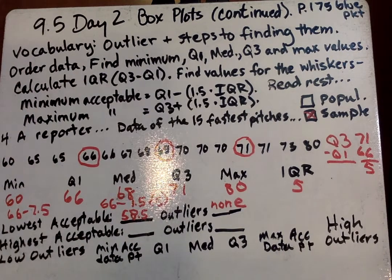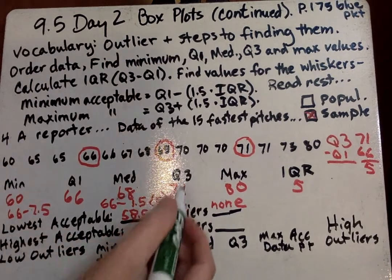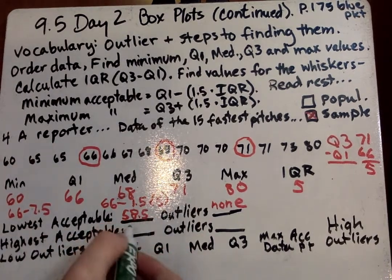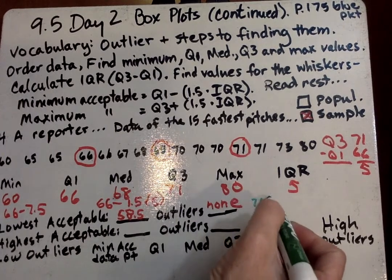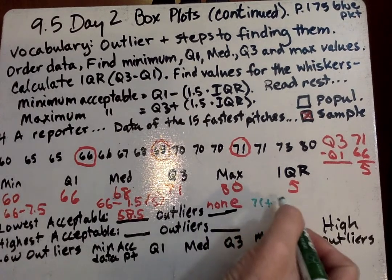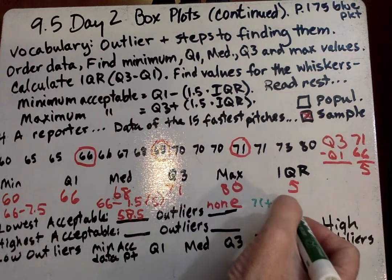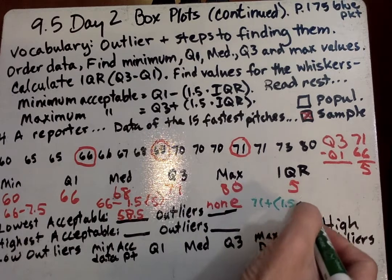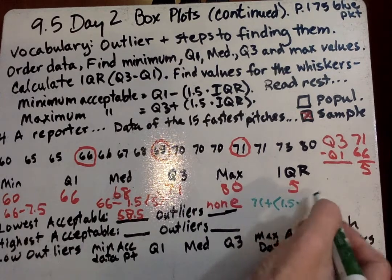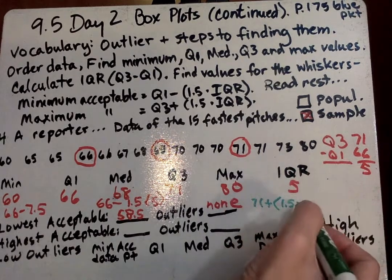Now, for our highest acceptable, we're going to take our quartile 3, and we're going to add that. So quartile 3 is 71, and I'm going to do the work over here. 71 plus, and then it's going to be 1.5 times our IQR, or interquartile range, which is 5.